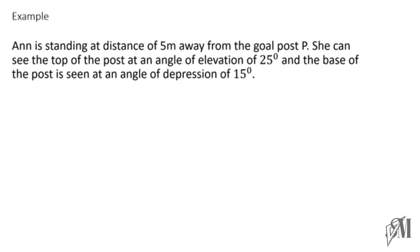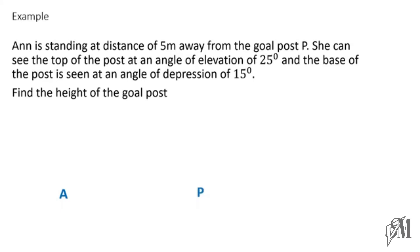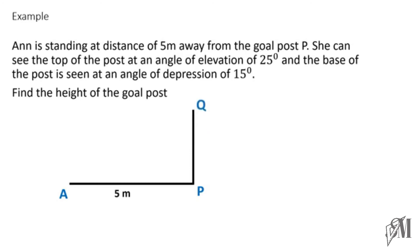Here is an example: Ann is standing at a distance of five meters away from goal post P. She can see the top of the post at an angle of elevation of 25 degrees, and the base of the post is seen at an angle of depression of 15 degrees. We are going to find the height of the goal post. Following step one, I mark point A where Ann is standing and point P where the goal post is situated — the distance between them is five meters. I draw the goal post and mark the top as Q.